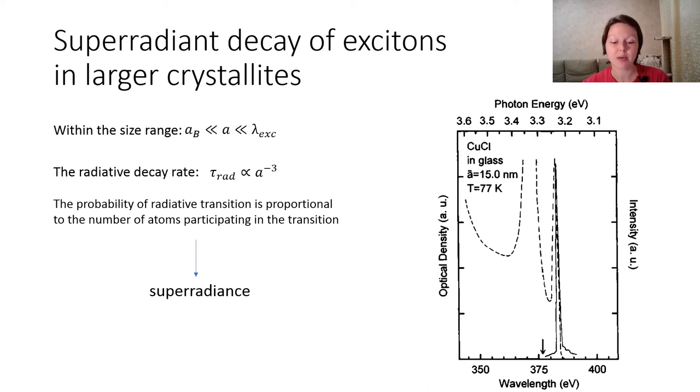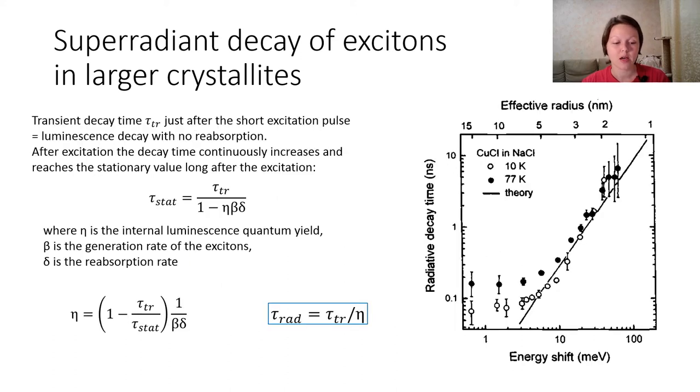The phenomenon of size-dependent superradiant decay of excitons has been observed firstly in copper chloride nanocrystals. Strong luminescence results from annihilation of Z3 exciton. Because of the small Stokes shift, the luminescence kinetics is influenced strongly by reabsorption effects. The Stokes shift is the difference between the energy of the luminescence maximum and the energy of the excitation maximum. Multiple absorption-emission cycles inside the sample result in slowing down of the luminescence kinetics.